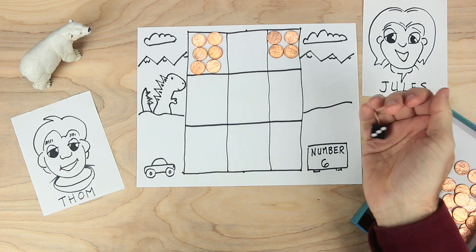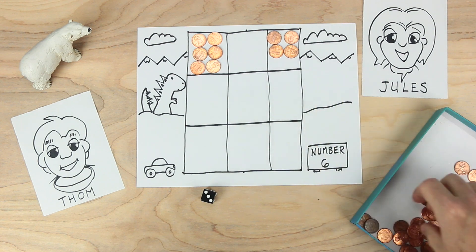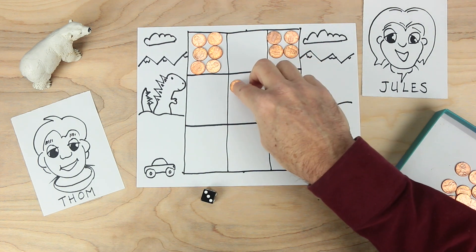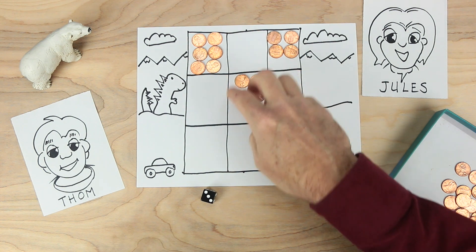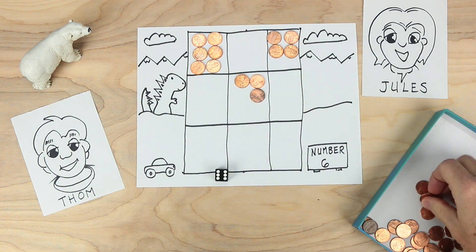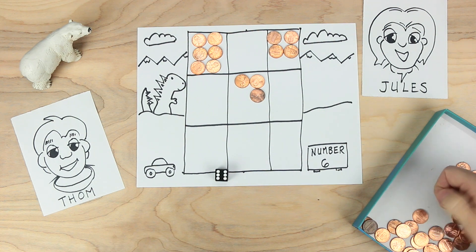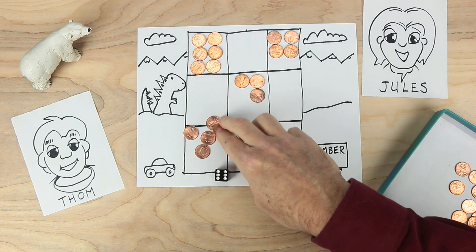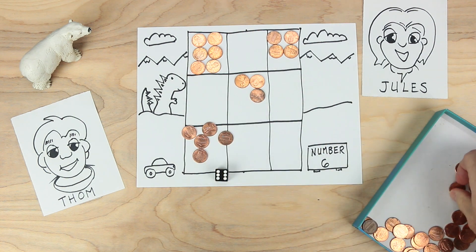It's Jules turn. Jules rolls a three. Cannot place them there. So Jules takes the coins and puts them in the very middle. Tom's turn. Tom rolls a six. And Tom's roll will fill one of these boxes. Tom decides to put six coins down here. Looks like I need one more. So two, four, six coins all together.